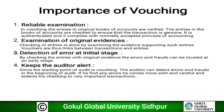Examination of original evidences: checking of entries is done by examining the evidence; entries in the books of accounts are the links between transactions and entries. Detection of error at initial stage: by checking the entries with original evidence, errors and frauds can be located at an early stage. Keeps the auditor alert: since the starting point of audit is vouching, the auditor can detect errors and frauds at the beginning and keep more alert on very important transactions.